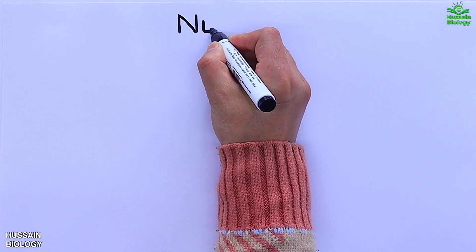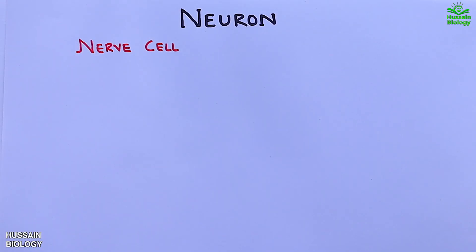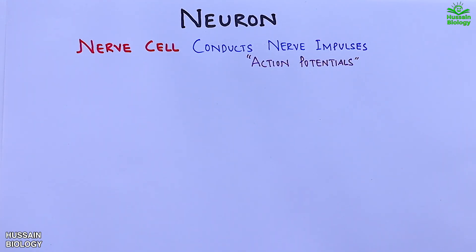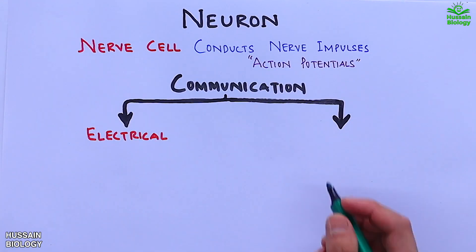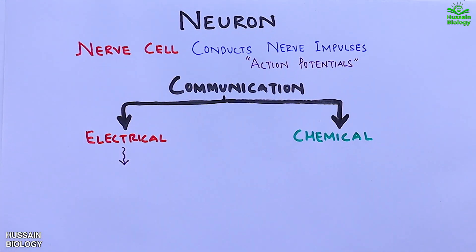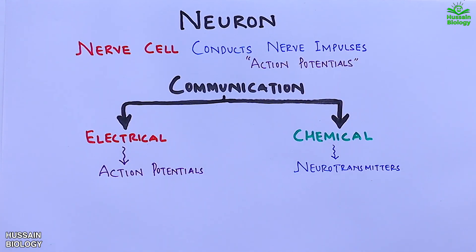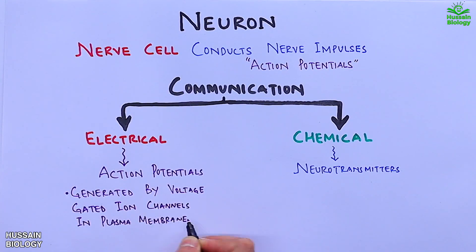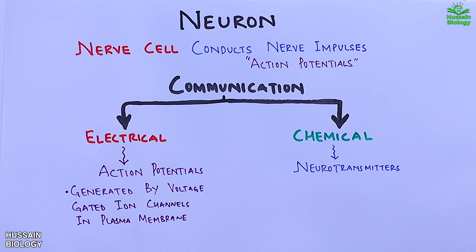In this video we will be discussing the neuron, also known as the nerve cell. This nerve cell conducts nerve impulses through action potentials. Neuron communication is by electrical and chemical means, so collectively neurotransmission involves electrochemical processes. The electrical process in the nerve cell is through action potentials, and the chemical process is through neurotransmitters. Action potentials are generated by voltage-gated ion channels in the plasma membrane of the nerve cell, and neurotransmitters are synthesized within the nerve cell and released into the synaptic cleft.